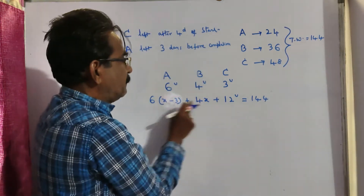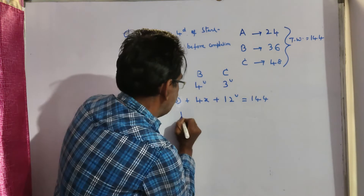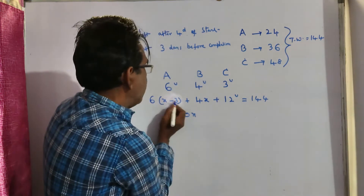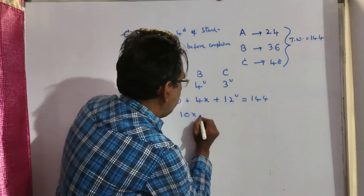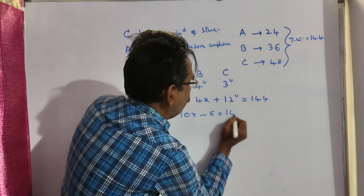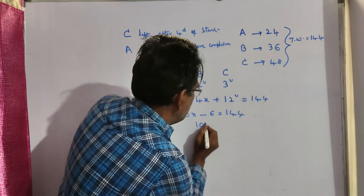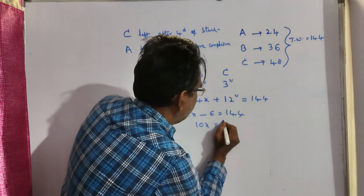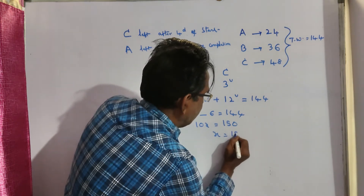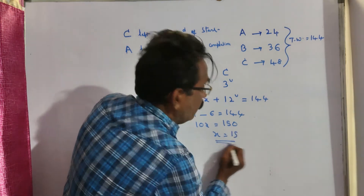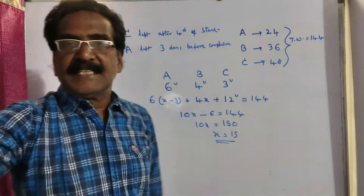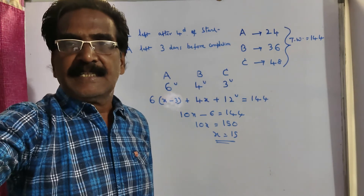So the equation is: 6(X minus 3) plus 4X plus 12 equals 144. That gives 10X minus 18 plus 12 equals 144, so 10X equals 150, and X equals 15 days. The work lasted for 15 days.